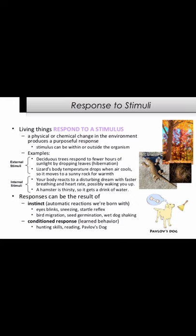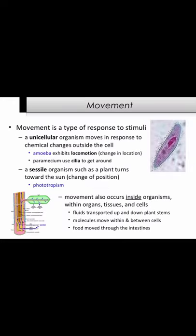Responses can be the result of instinct — automatic reactions we're born with: eye blinks, sneezing, startle reflex, bird migration, seed germination, wet dog shaking. Or conditioned response — learned behavior: hunting skills, reading, Pavlov's dog. Movement is a type of response to stimuli. A unicellular organism moves in response to chemical changes outside the cell. An amoeba exhibits locomotion — change in location. Paramecium use cilia to get around. A sessile organism such as a plant turns toward the sun — phototropism.